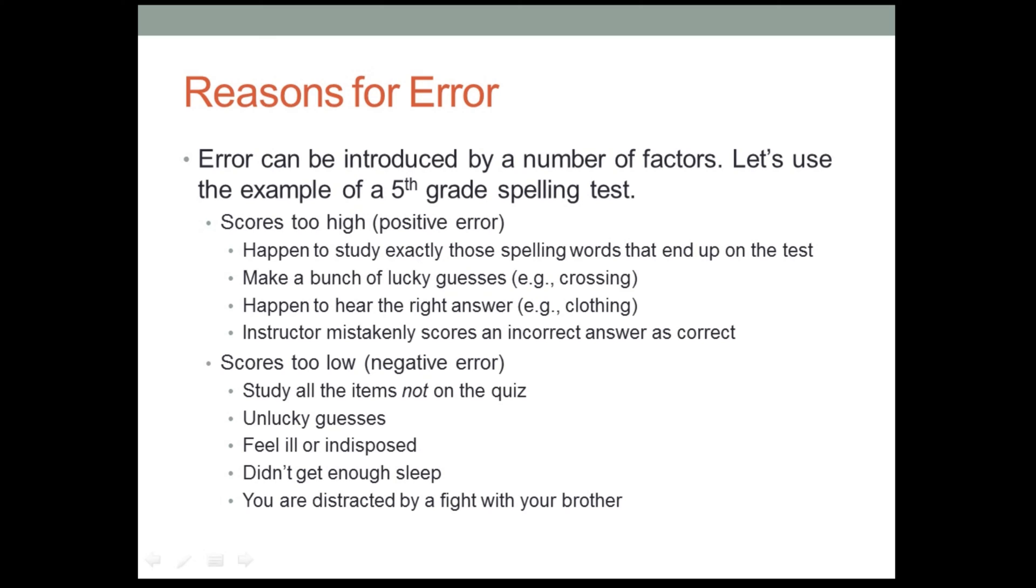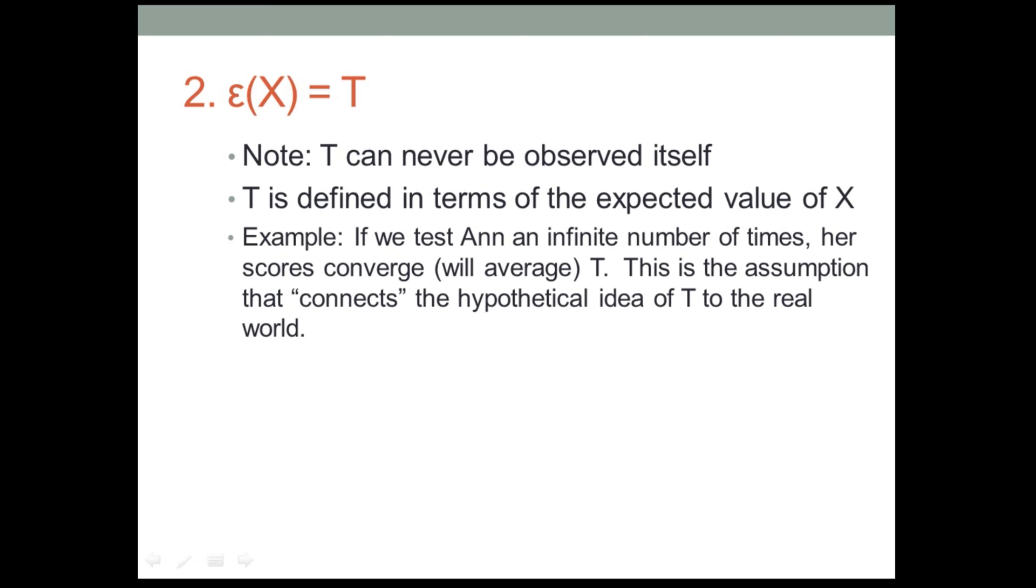And if we think about this, how this unfolds over time, we can, it leads us actually to the second equation, as I'll explain in a little while. But first, let's just take a look at that second equation. And that second equation states that the expected value of your obtained scores over time, usually, is equal to your true score.